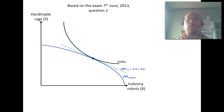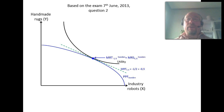So we have to give away one-half rug to be able to produce one more industry robot. That indicates that we will also have the same slope of the indifference curve, so the marginal rate of substitution between handmade rugs and industry robots will also become minus one-half. The consumers are willing to give away one-half of a rug to be able to consume one more industry robot.